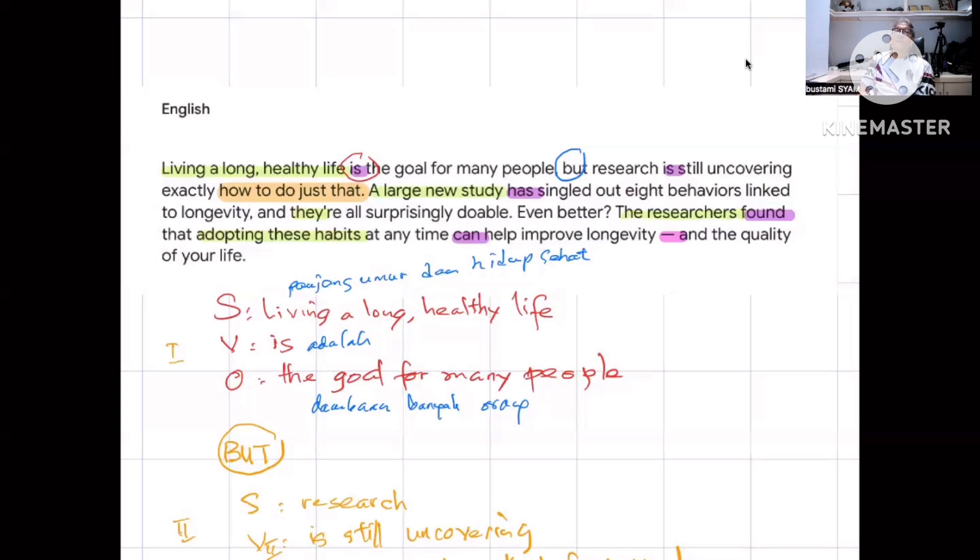Now, we find a connector again, but a connector that supports the first sentence. Therefore, this is also a compound sentence. 'And they are all surprisingly doable', and these, the eight habits, can be implemented, can be carried out in daily life. So we've found, we can imagine that in the following paragraphs...